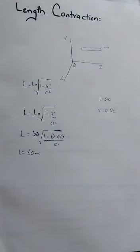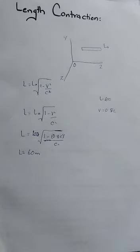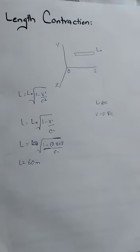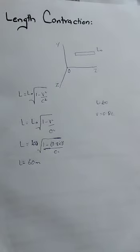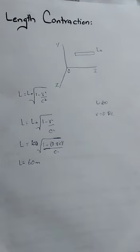The next result of the special theory of relativity is length contraction. As we already discussed, length, mass, motion and time are relative quantities — meaning the length of the same object is different for different observers. The length of an object contracts, meaning it becomes shortened, when the object moves with a higher speed — specifically a speed comparable to, but not equal to, the speed of light.